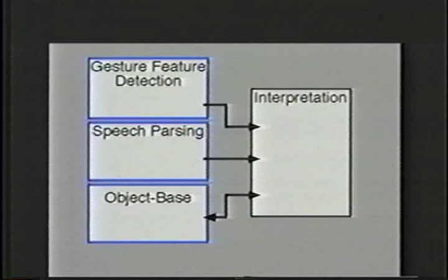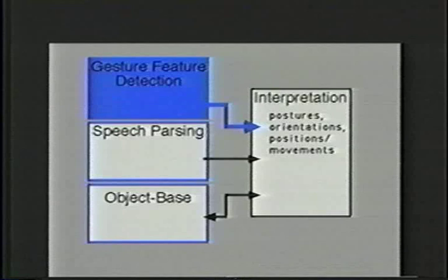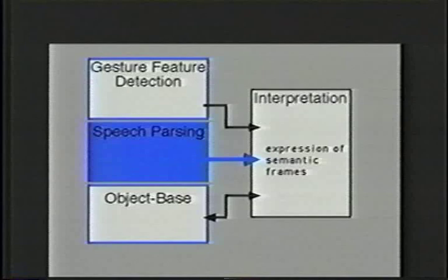The prototype system is composed of four principal parts. A gesture module gathers the position and posture data for the user's hands from a pair of data gloves. It then analyzes and segments the stream into gestural features. This intermediate encoding of gestures focuses on the characterization of postures, positions, and orientation of the hands during significant static and dynamic periods.